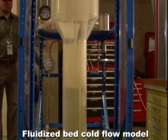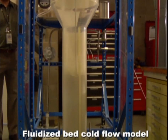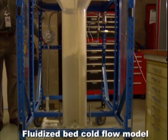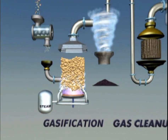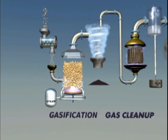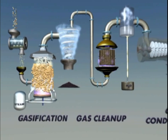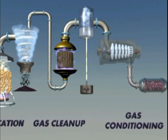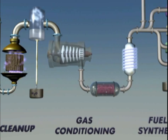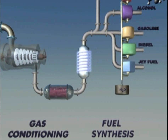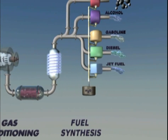The thermochemical conversion process uses heat to break down biomass into intermediates, such as gas or bio-oil, that can be upgraded into fuel and other products. One type of thermochemical conversion process is gasification, a method that uses heat to turn biomass into a hydrogen and carbon monoxide rich gas called synthesis gas or syngas. This in turn is converted into liquid transportation fuels or other products.